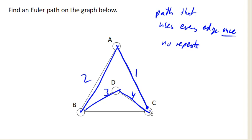And notice now I have covered every single edge of the graph without repeating any of them. Notice though I started here, and I ended over here, so I have not returned to my starting point. This would be an Euler path.